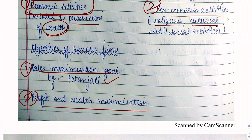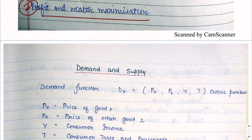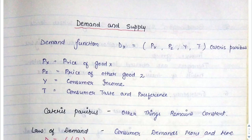Next we have profit and wealth maximization. Now we will start with demand and supply. We need to understand how any firm will analyze demand, forecast it, and treat its supply accordingly. Let us begin with demand.